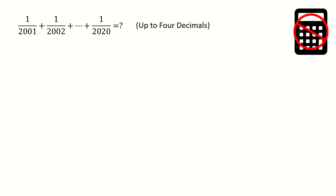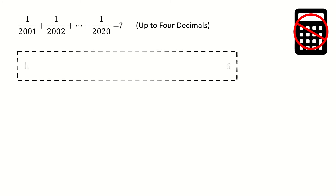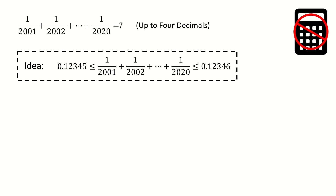Here is problem 2. This problem looks tough, because we need to calculate the result up to 4 decimal places without using a calculator. So we need to find some smart way to solve this problem. The idea is to find the lower and upper bound. For example, the lower bound is equal to 0.12345 and the upper bound is equal to 0.12346, so up to 4 decimal places precision the answer is equal to 0.1234.